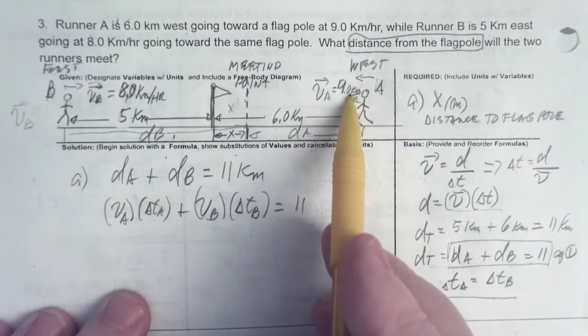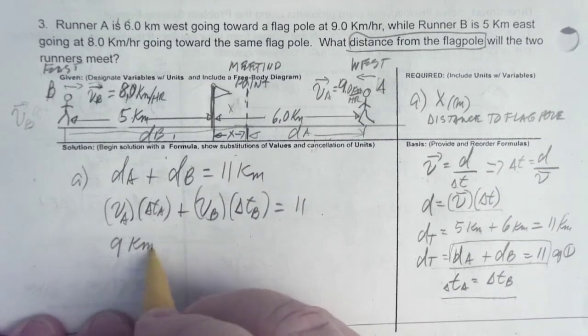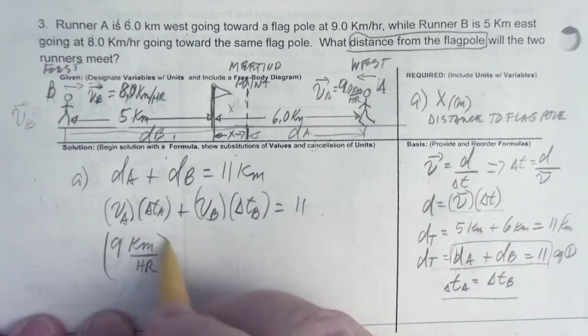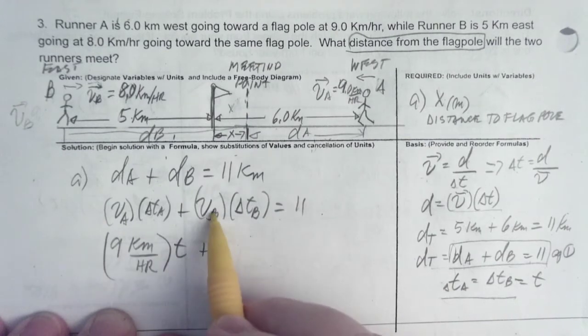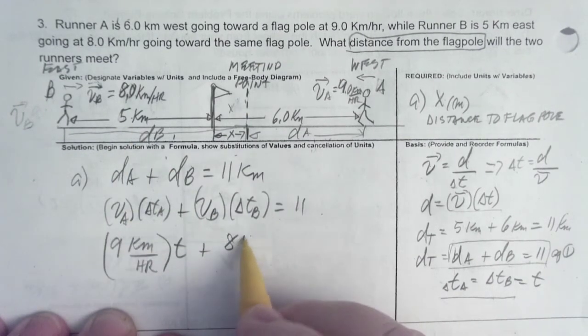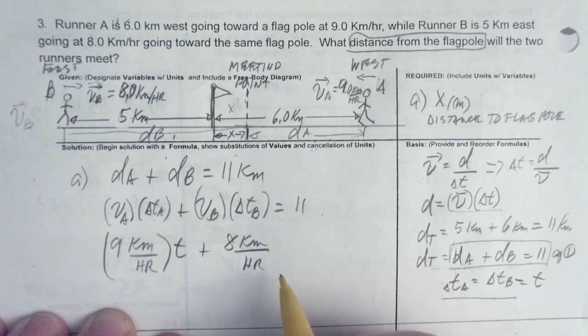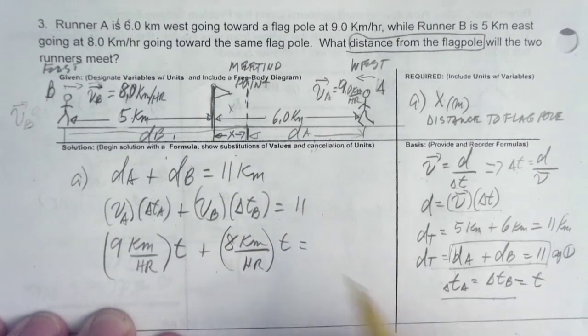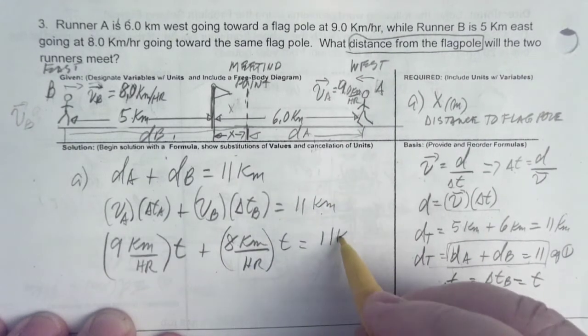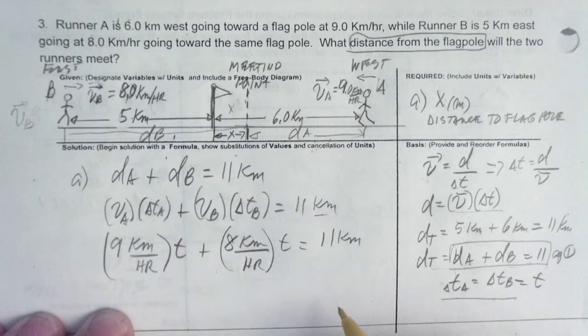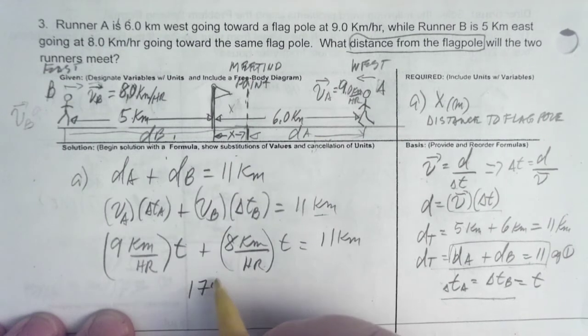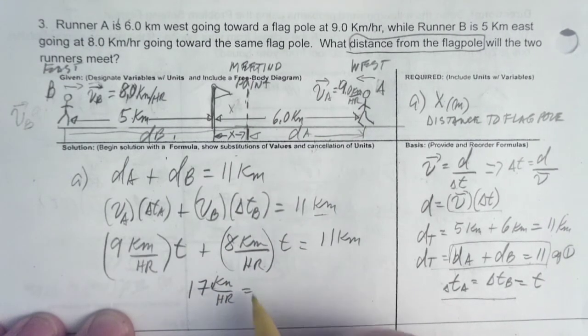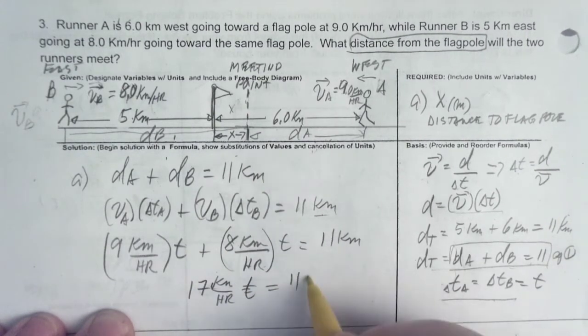What is VA is 9. So, 9 kilometers per hour times T, right? This is equal to T. They're all the same anyway. Plus BB, 8 kilometers per hour times T is equal to 11. Remember to write a unit for every number. I raise minus 1. So, what can we do with this? We can combine because they both have the same variable. And therefore, that will be 17 kilometers per hour times T is equal to 11 kilometers.